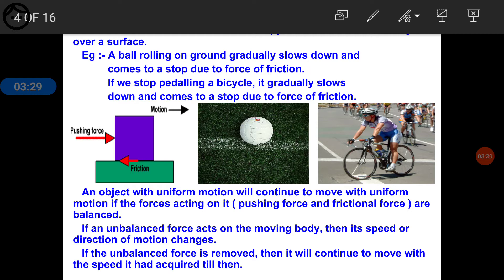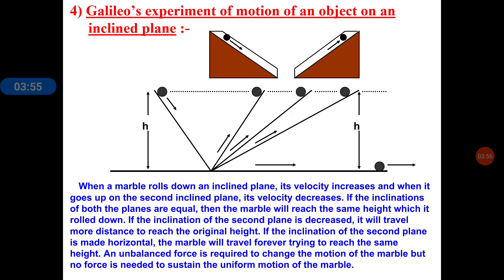If the unbalanced force is removed, the object will continue to move with the speed it has acquired. If there is no unbalanced force on the object, it will continuously move until it is stopped. So, to bring any object from motion to rest, or from rest to motion, we require an unbalanced force. Galileo worked on this, adding to what Aristotle had previously said about balanced forces.